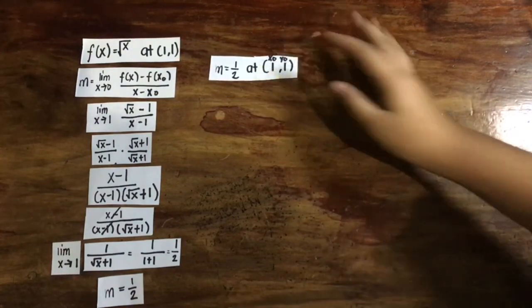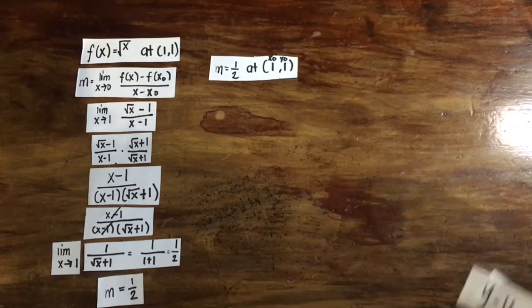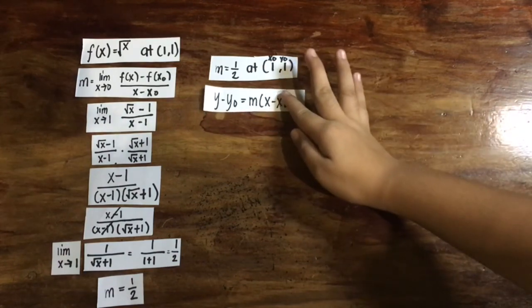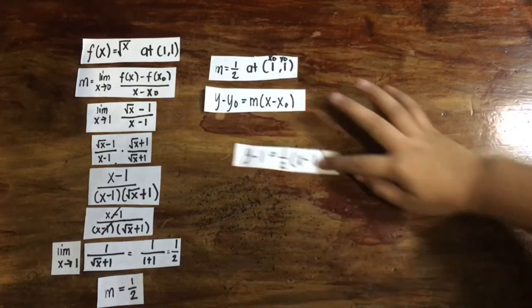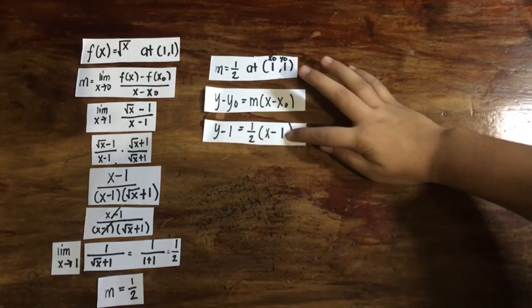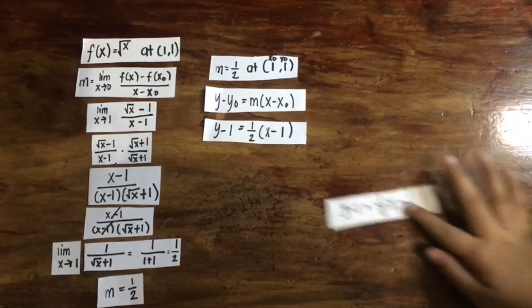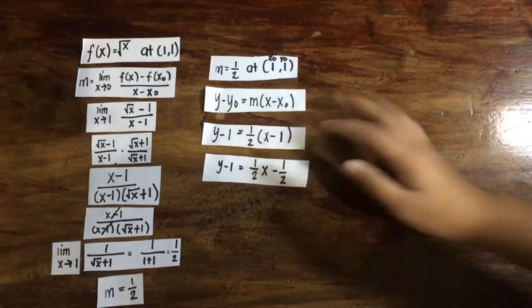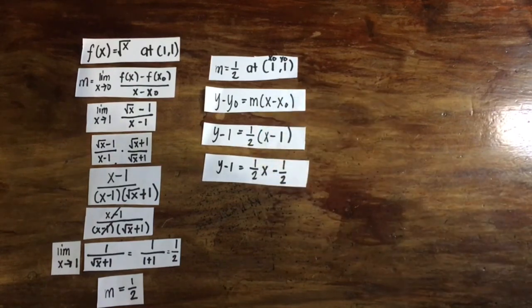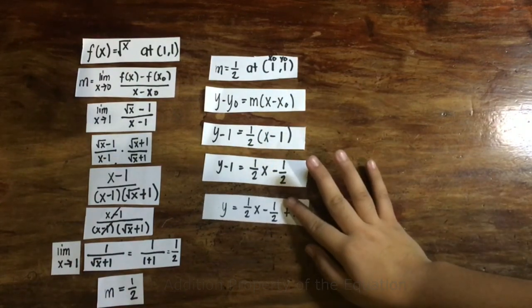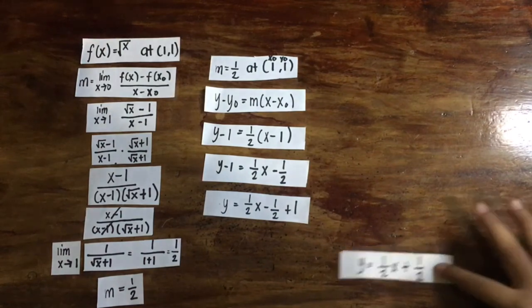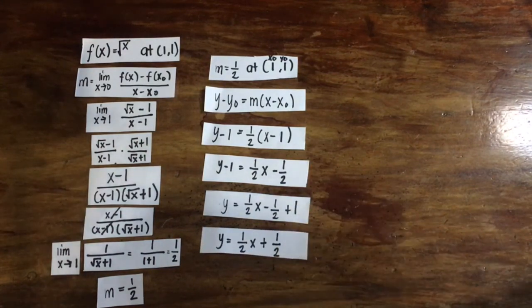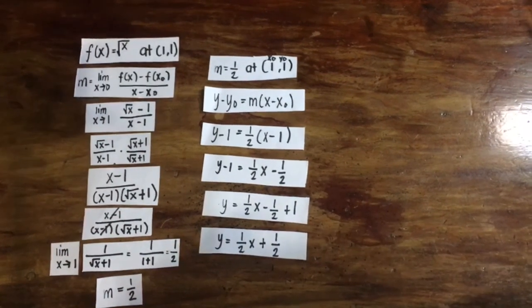So the slope of the line is 1 half. Given the slope 1 half at point (1, 1), we substitute the given values into the point-slope formula: y minus 1 equals 1 half multiplied by x minus 1. We get y minus 1 equals 1 half x minus 1 half. Moving negative 1 to the right side and combining like terms, we obtain y equals 1 half x plus 1 half as the tangent line equation.